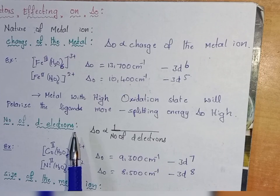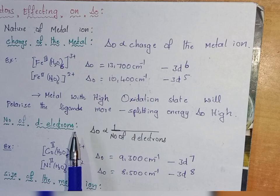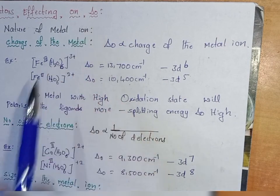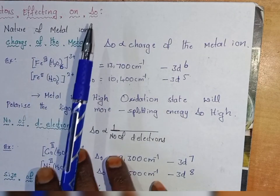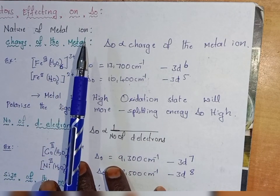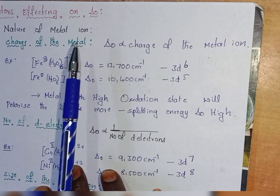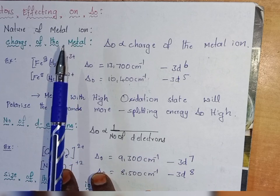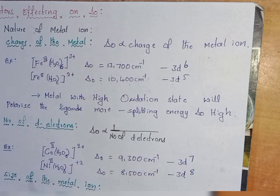Hello everyone, today I am going to discuss about the factors affecting delta O. What is delta O? Crystal field splitting energy in an octahedral complex is said to be delta O. Here we are going to discuss the factors.